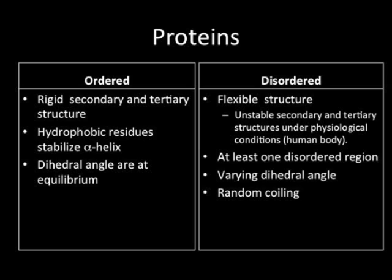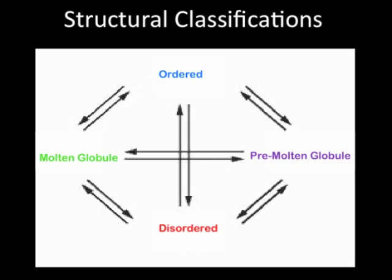Disordered proteins are characterized by a flexible structure. They have unstable secondary and tertiary structure under physiological conditions, and there must be at least one disordered region. There is a varying dihedral angle and random coiling, which is a result of the alpha helix being unfolded. There are four types of structural classifications, which represent the thermodynamic states that the protein changes between.